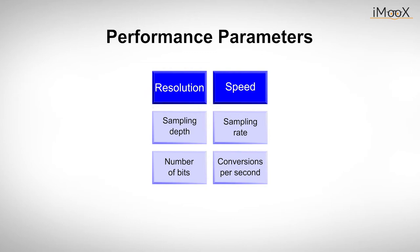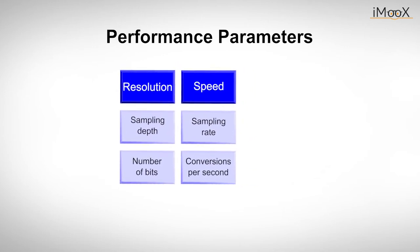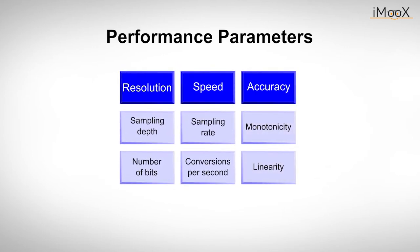In datasheets those parameters are typically denoted as the sampling depth, which gives us the number of bits at the output, and the sampling rate, which gives us the number of conversions per second. Depending on the application, one might also be interested in the accuracy. Especially monotonicity and linearity are of great importance, as we have discussed in our last video.